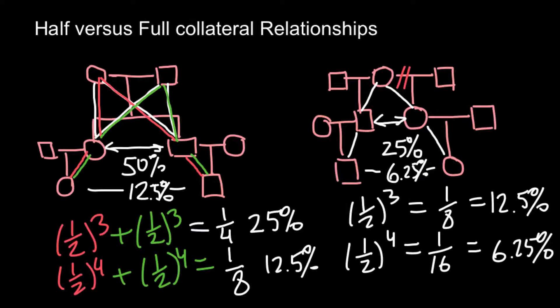I hope my explanations were clear enough. Now you should be able to calculate the collateral coefficient of relatedness between full relatives and half relatives. That's all for today — thank you for your attention. Please subscribe for my new videos, which I post almost every day.